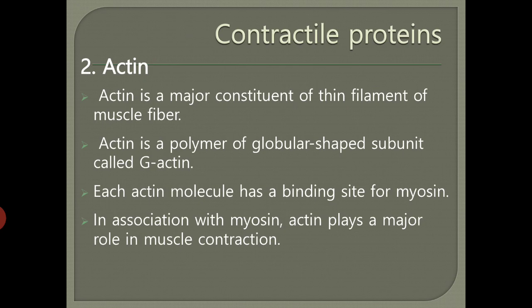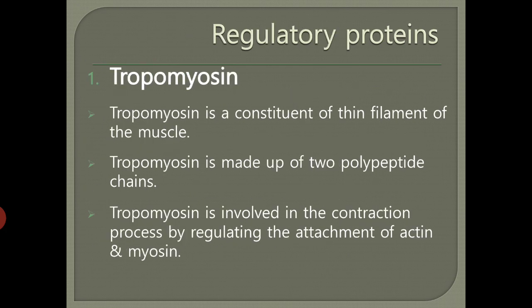Actin is the major constituent of the thin filament of the muscle fiber. Actin is a polymer of a globular-shaped subunit called G-actin. Each actin molecule has a binding site for myosin, so the myosin head comes and binds to it. In association with myosin, actin plays a major role in muscle contraction.